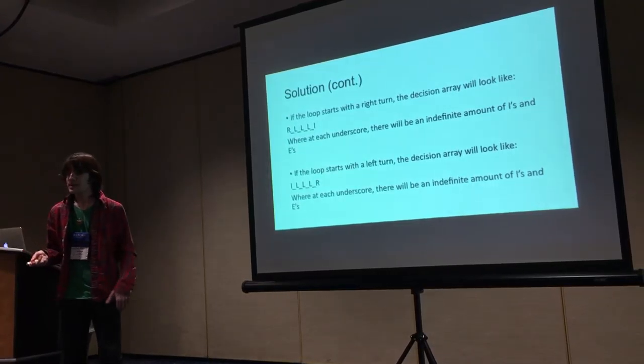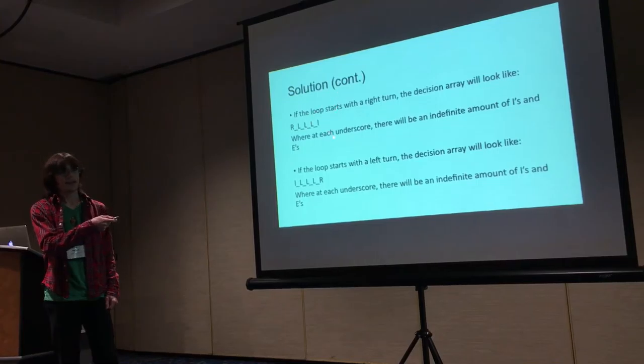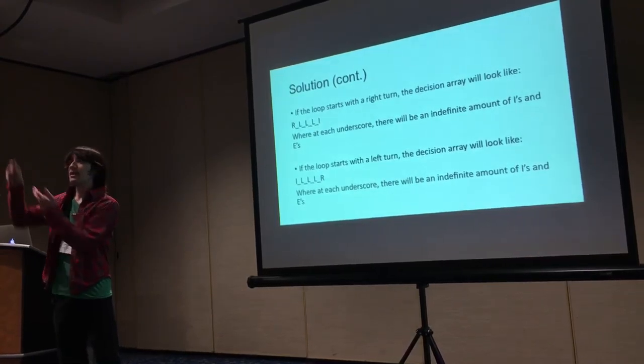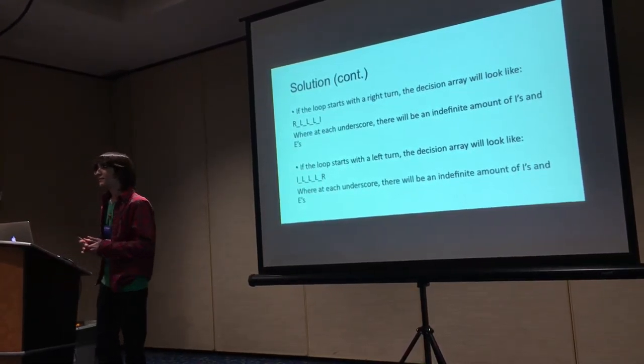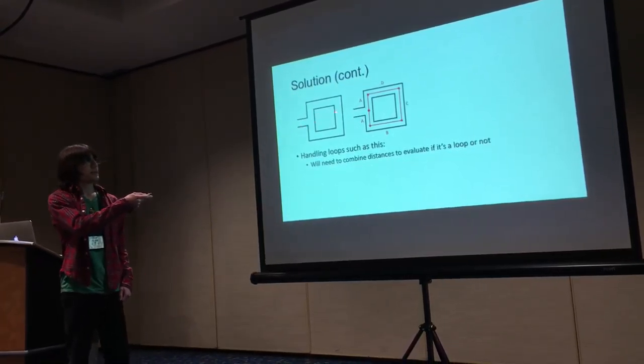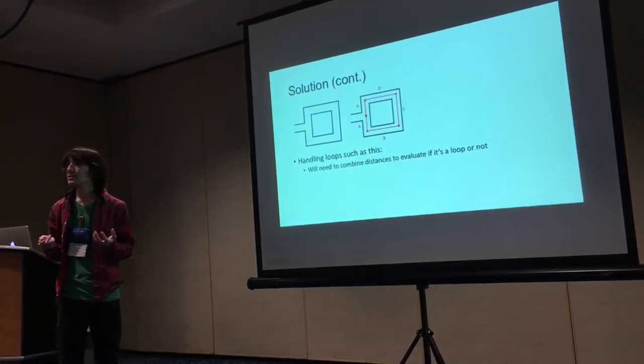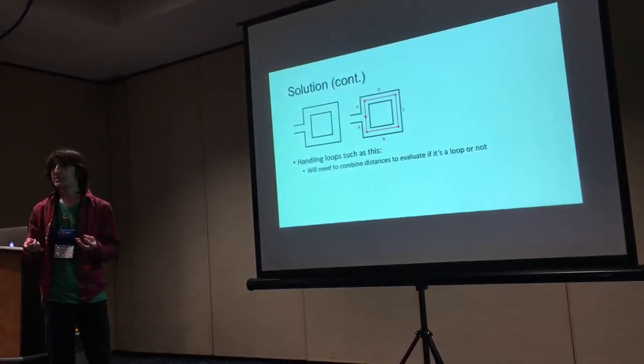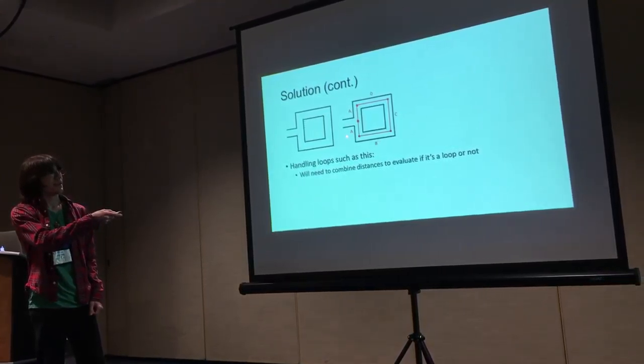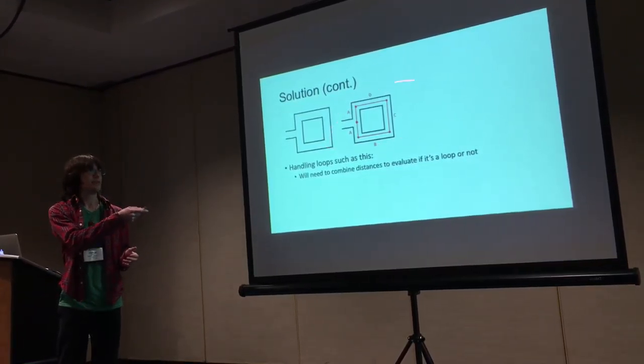In the decisions array, if the loop starts with a right turn, the array will look like R-L-L-I, and in between those characters there's an indefinite amount of I's and E's depending on branching paths in the loop. It'll look the same with a left turn when it starts. But this doesn't cover every loop. If we enter in the middle, we'll still only need to take the distances between our decisions, but we'll need to add certain distances and compare. For this loop, we'll have to add distances a1 and a2 and compare that to c. There's still more cases of loops that this won't solve.